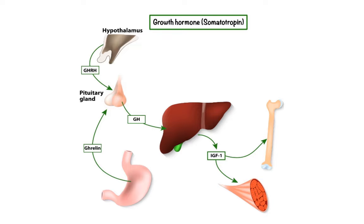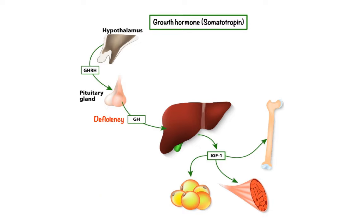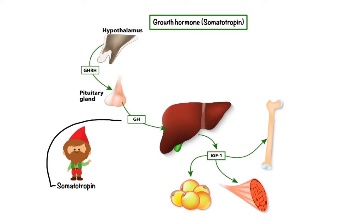In addition, growth hormone can directly bind to its receptors on target cells such as fat cells, causing them to break down triglycerides and suppress their ability to take up and accumulate circulating lipids. Deficiency in growth hormone can lead to developmental disorders such as growth retardation or dwarfism. To treat these disorders, a synthetic somatotropin can be injected to compensate for insufficient growth hormone levels. Pediatric patients with growth failure and severe IGF-1 deficiency who are unresponsive to somatotropin can be treated with a recombinant human IGF-1 product called mecasermin.